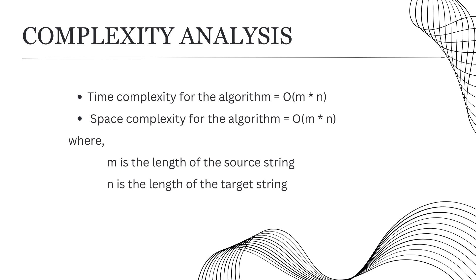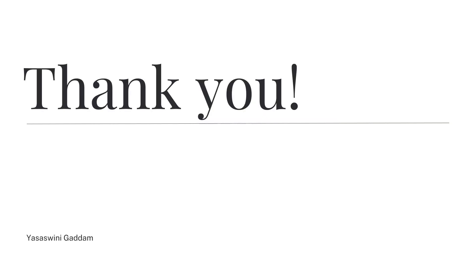The time complexity of the minimum edit distance algorithm is based on the size of the dynamic programming matrix, which is (m+1) × (n+1), where m is the length of the source string and n is the length of the target string. Both the time complexity and space complexity are O(m × n).